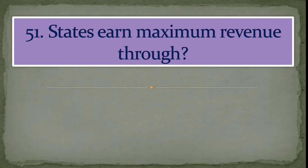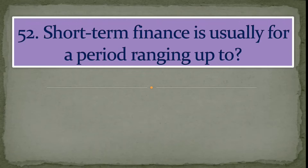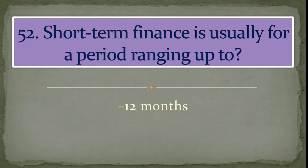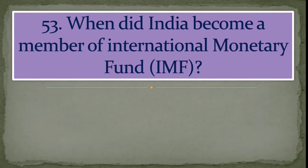Question number 51: States earn maximum revenue through? Answer: commercial taxes. Question number 52: Short-term finance is usually for a period of up to? Answer: 12 months.